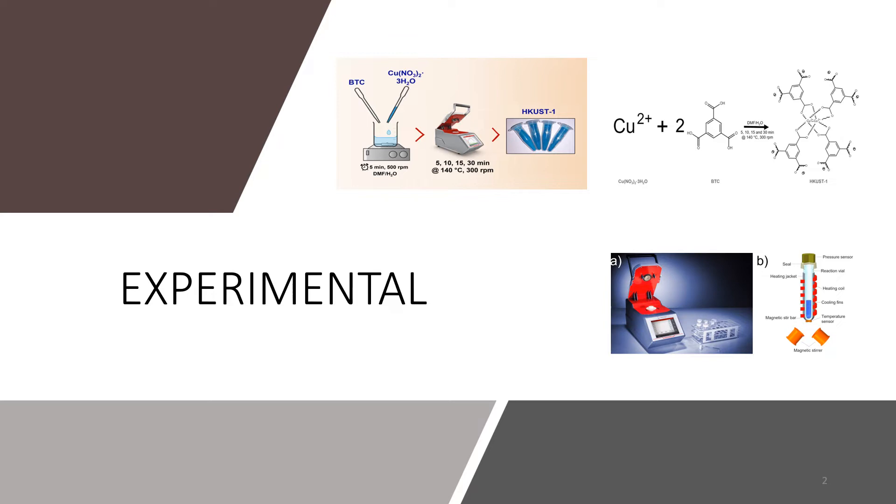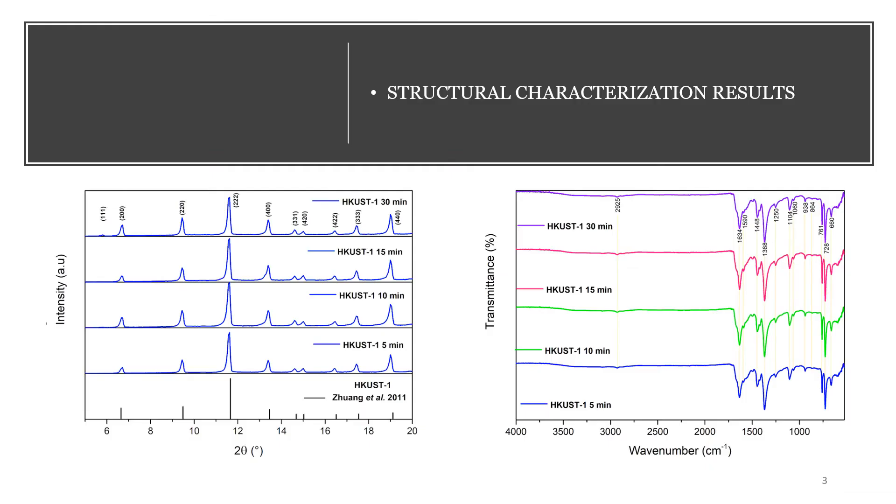The amount of product obtained per reaction was between 165 and 205 milligrams, which was higher than the reported values by the solvothermal method in the literature. Therefore, the calculated yields per reaction at 5, 10, 15, and 30 minutes were 84, 96, 100, and 81 percent.